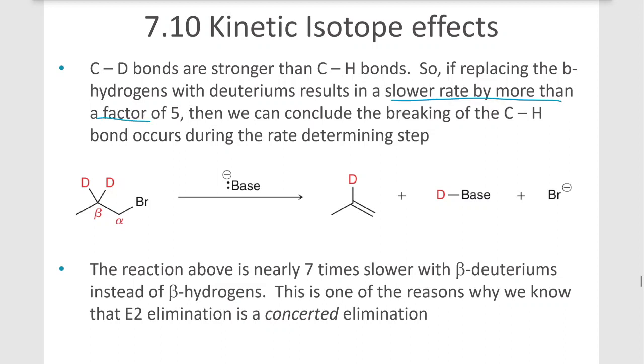If it slows the rate by more than a factor of five, then we can conclude that the breaking of that carbon-hydrogen bond occurs in the rate determining step. In this case, the reaction is nearly seven times slower with the beta deuteriums than beta hydrogens. This is one of the reasons we know that the E2 elimination is a concerted elimination.